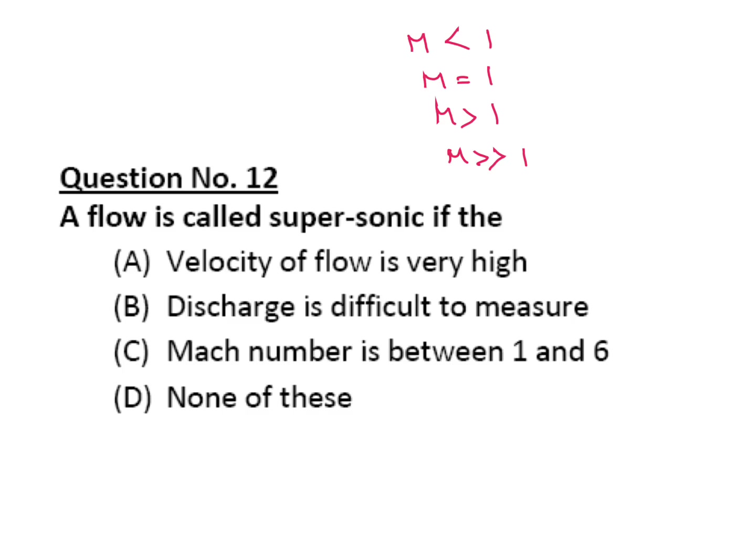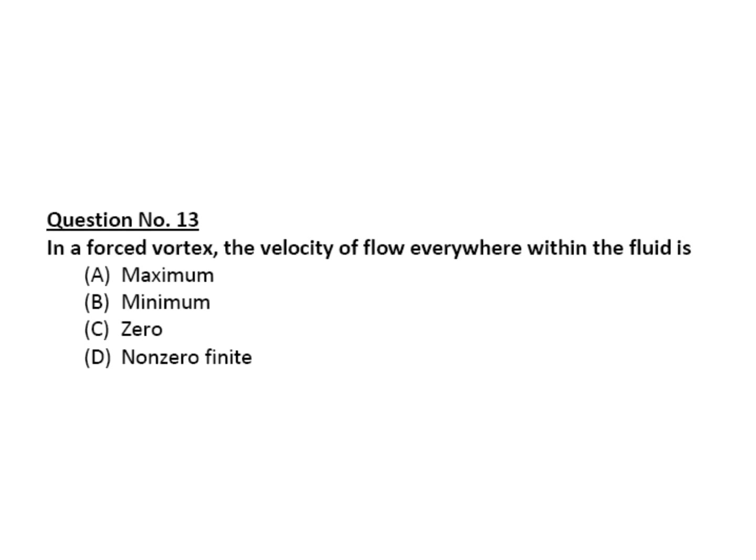In a forced vortex flow, the velocity of flow everywhere within the fluid is... We know for forced vortex flow, angular velocity is constant, or v equal to r omega. V by r equal to omega is constant.